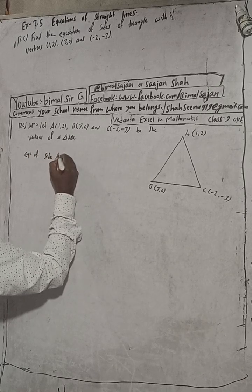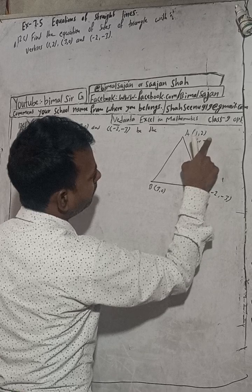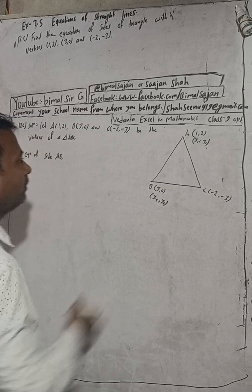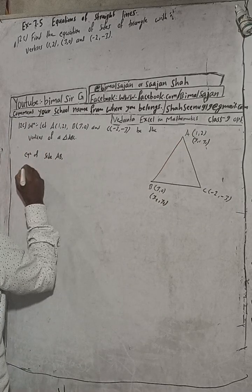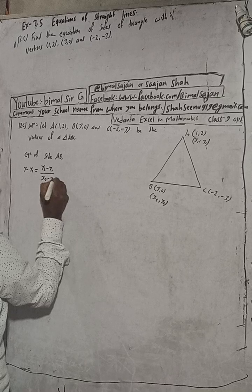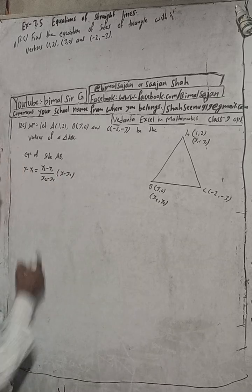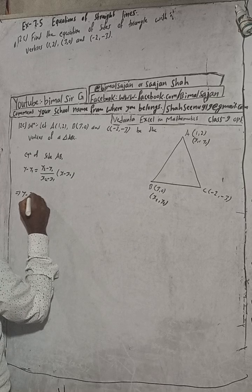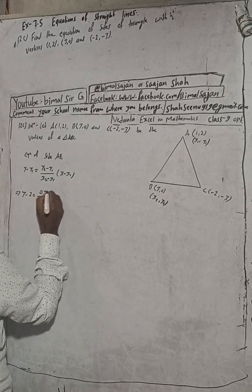For side AB, we take A(1,2) as (x1,y1) and B(3,0) as (x2,y2). Now using the two-point form, the formula is: y minus y1 equals (y2 minus y1) divided by (x2 minus x1), times (x minus x1). Now just put the values. y minus y1, our y1 is 2, and y2 is 0.